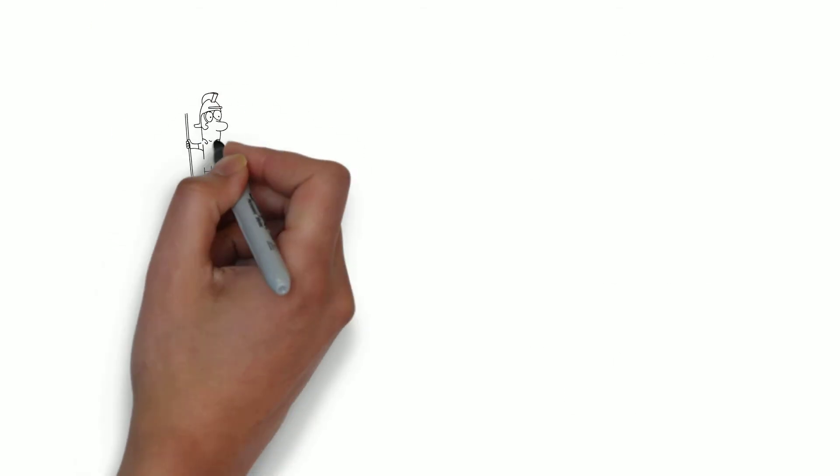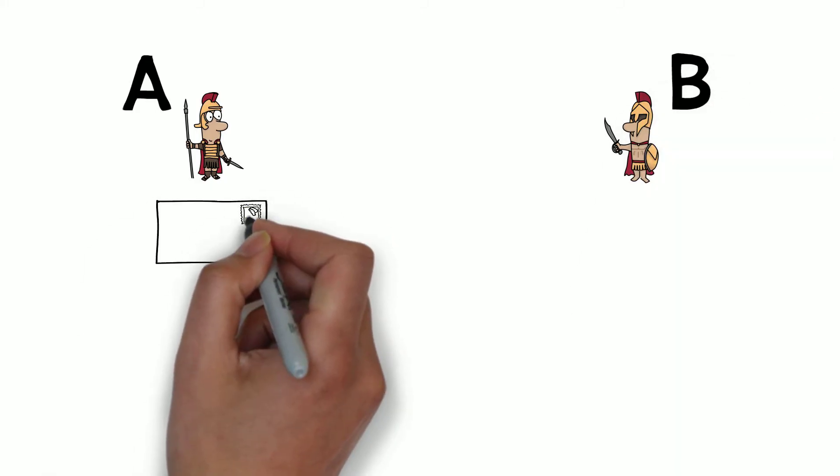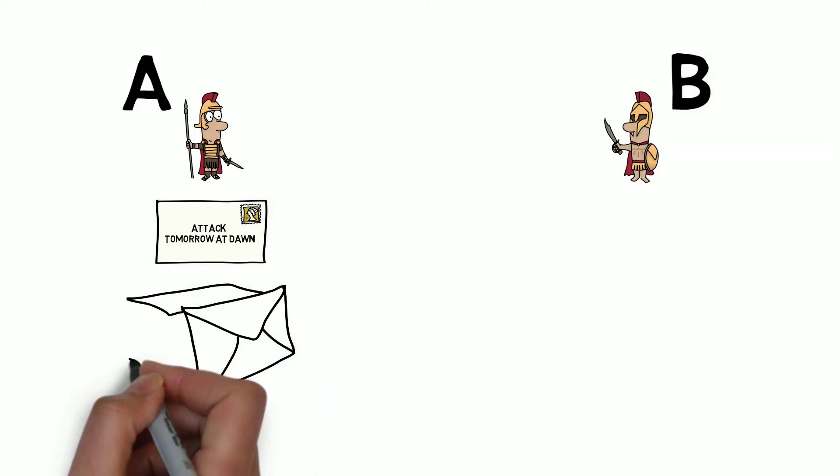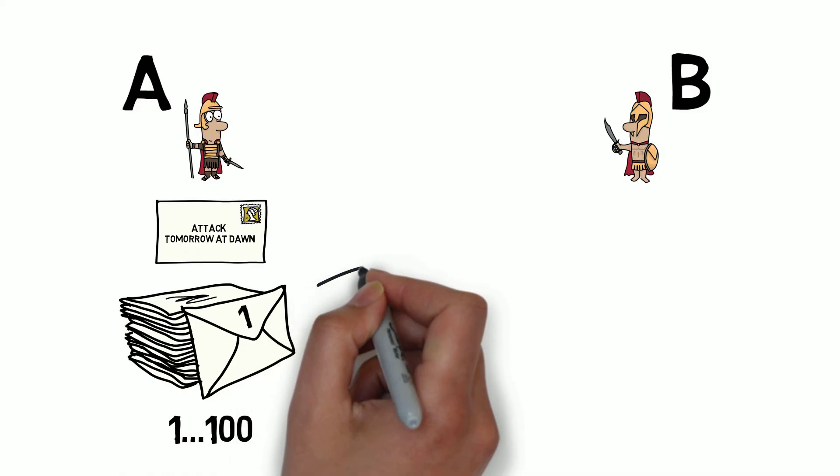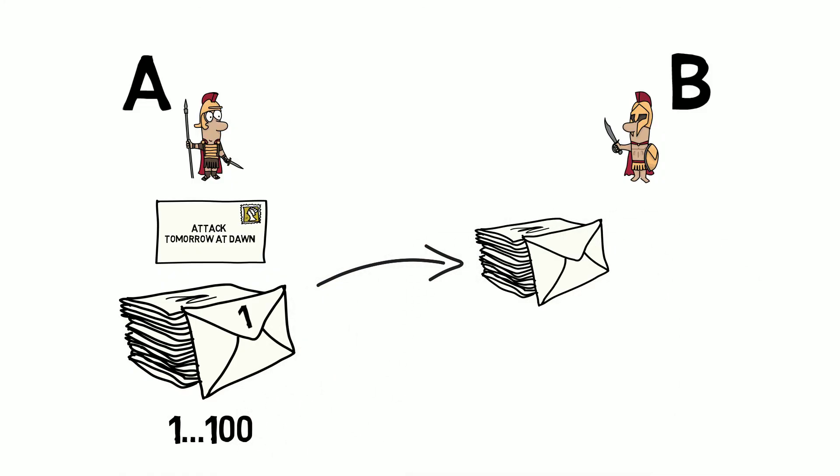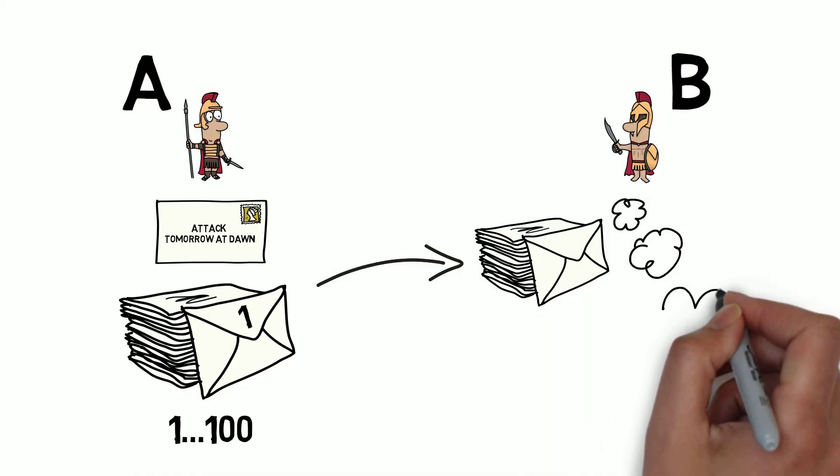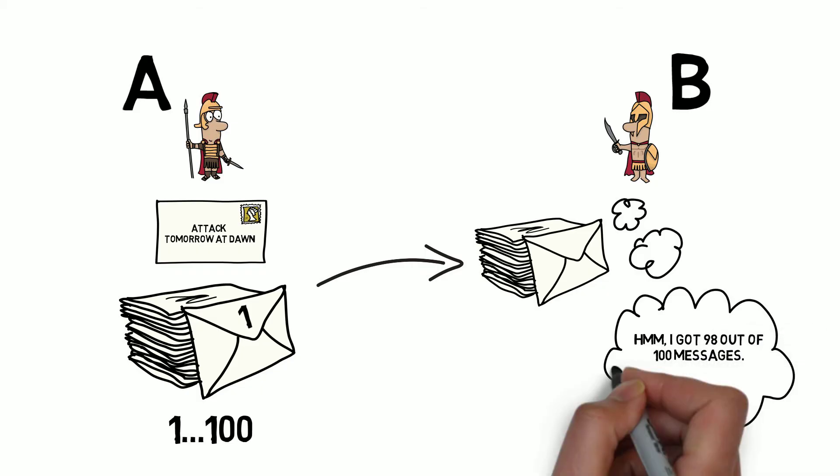Let's go back to our generals. What if general A, instead of sending only one messenger, sends 100 of them, assuming that general B will receive at least one message? How about marking each message with a serial number starting from 1 up to 100? General B, based on the missing numbers in the sequence, would be able to gauge how reliable the communication channel is and reply with an appropriate number of confirmations.